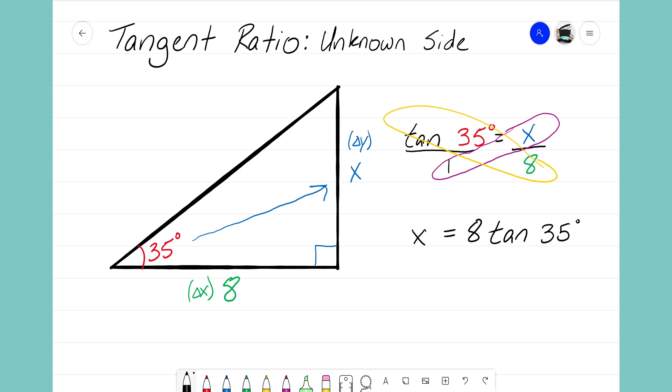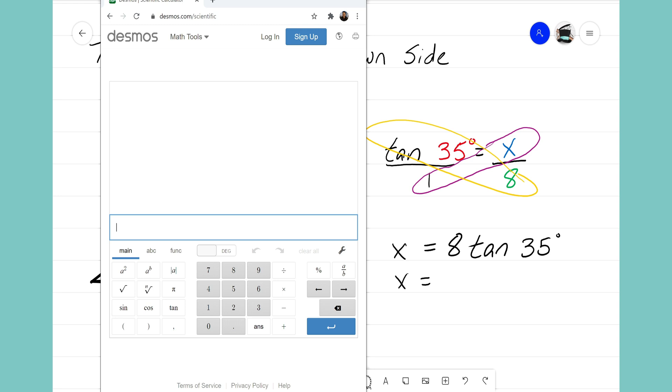And now is the point where we can use our calculator. We can enter this part in, 8 times tangent of 35 degrees, and we'll be able to figure out what our value of x is. So let's get our calculator out. So I've pulled up my free Desmos calculator online.